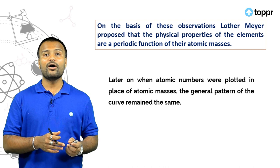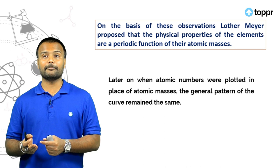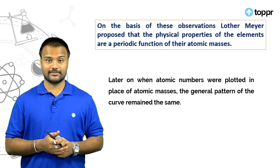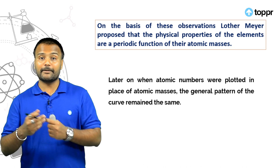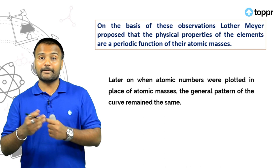Based on these observations, Lother-Meyer proposed that physical properties such as atomic volume, boiling point, and melting point are periodic functions of atomic masses. When atomic numbers are plotted instead of atomic masses, the general pattern of the curve remains the same.